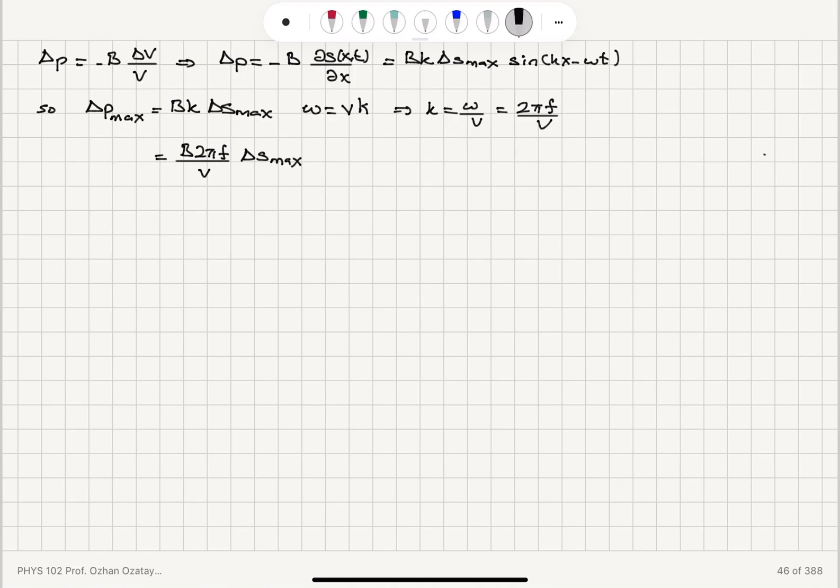So here we can read that the frequency is delta P max times V divided by 2 pi times bulk modulus times delta S max.